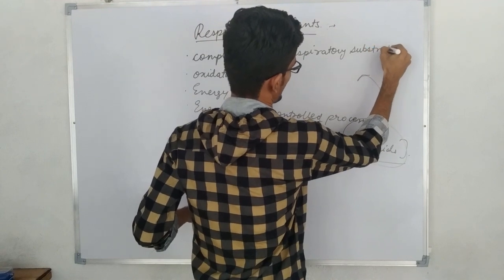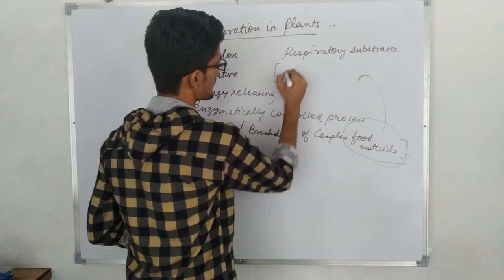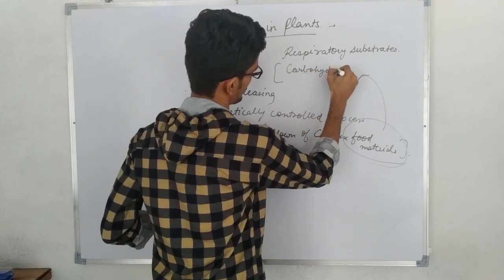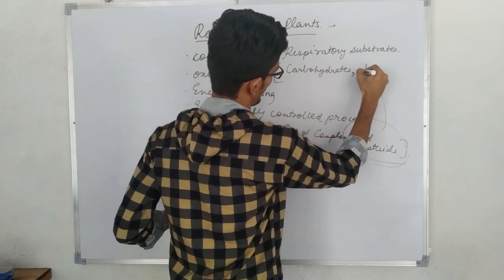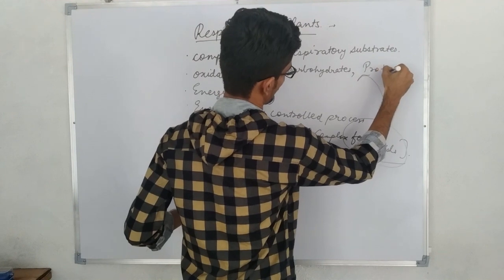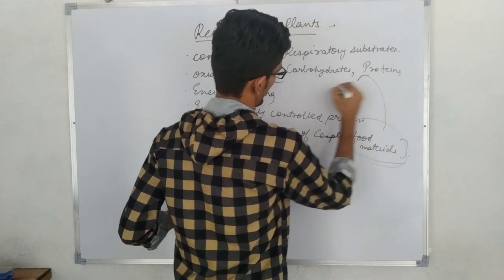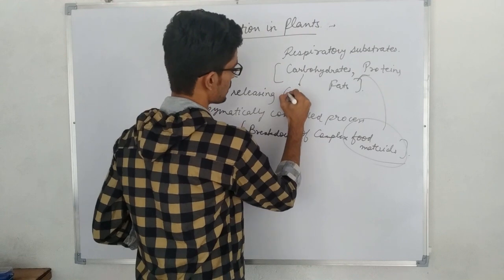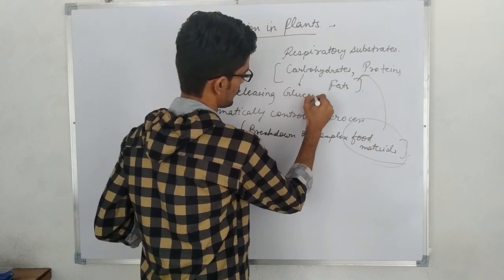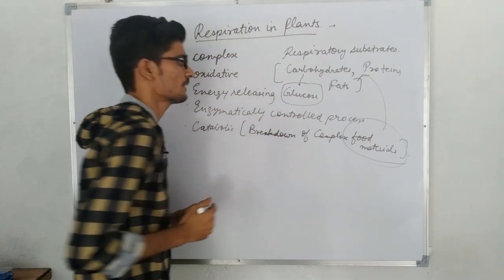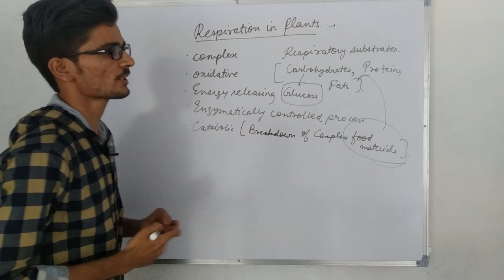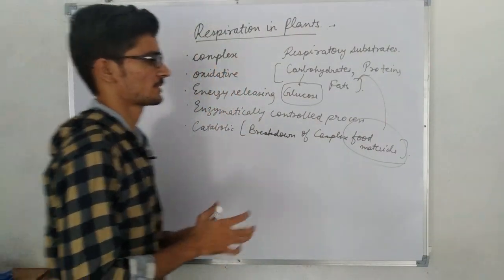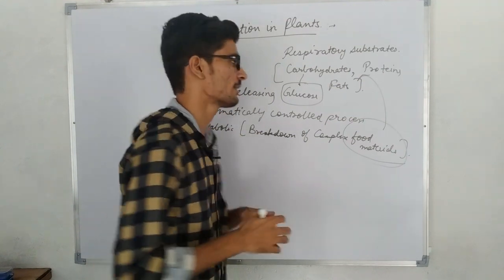Respiratory substrates can be carbohydrates, proteins, fats, etc. But primarily the substrate is a carbohydrate, and within that, it is glucose. So glucose is the primary respiratory substrate whose breakdown occurs, and in this process energy is released. The breakdown results in CO2 and H2O.